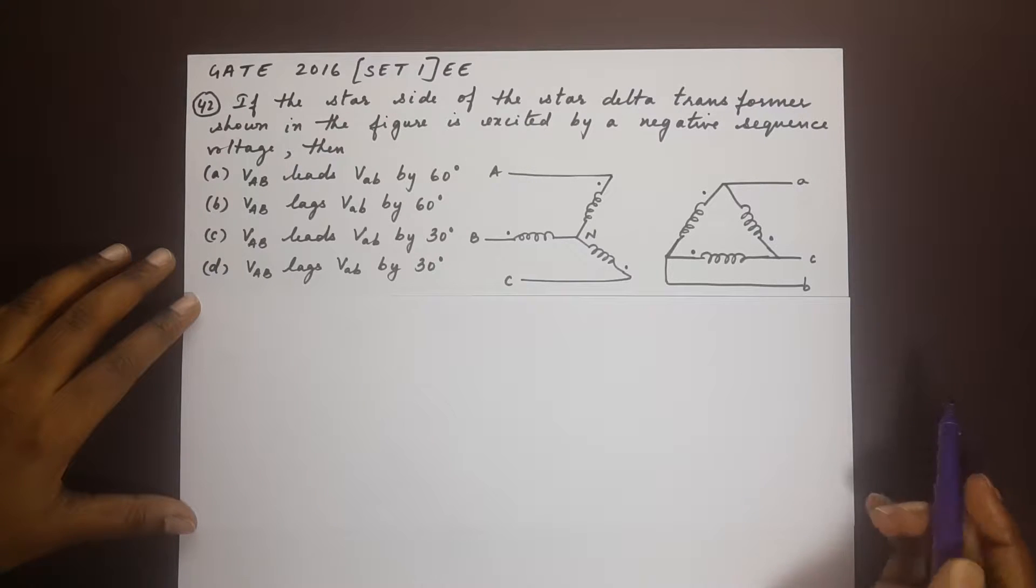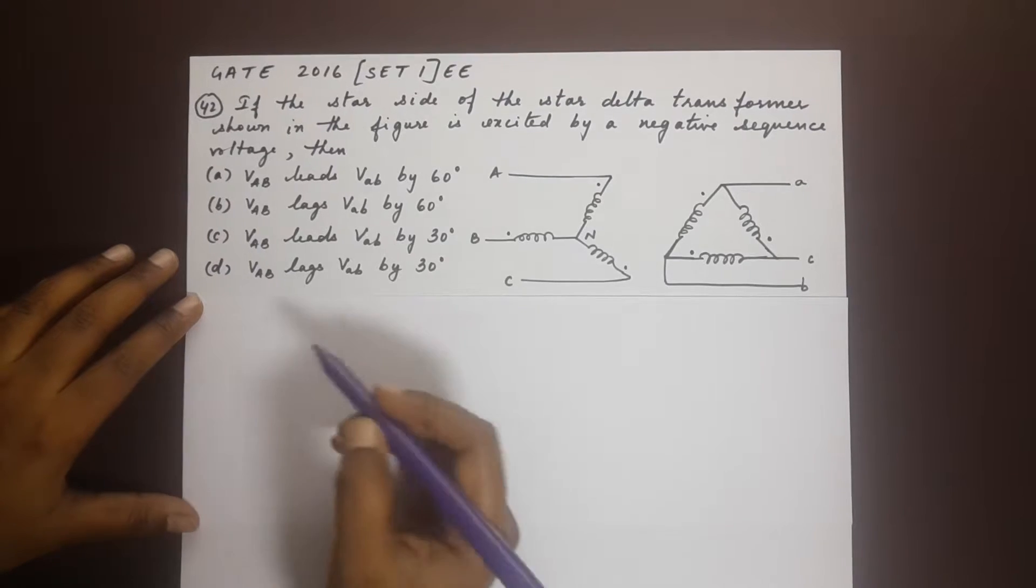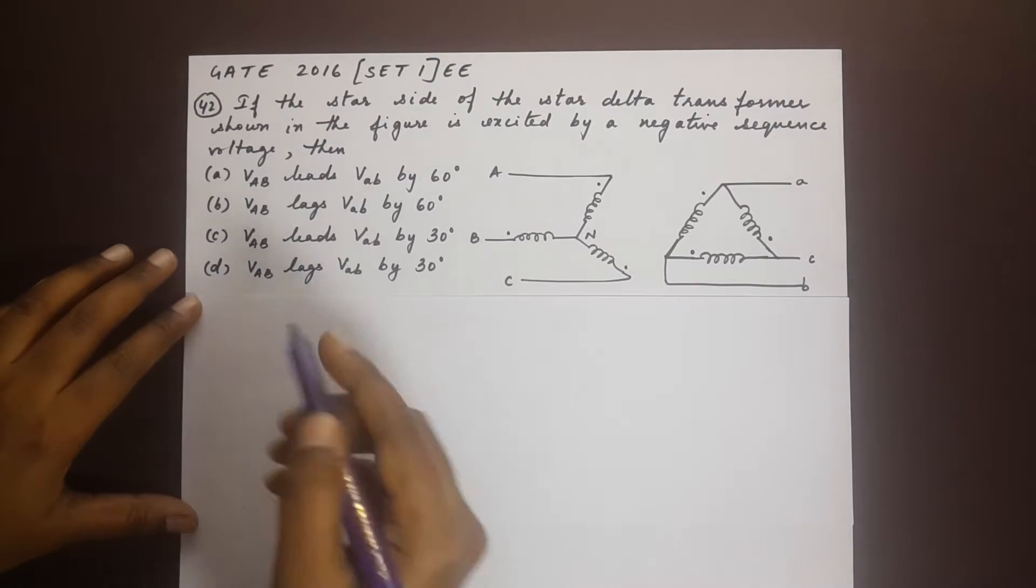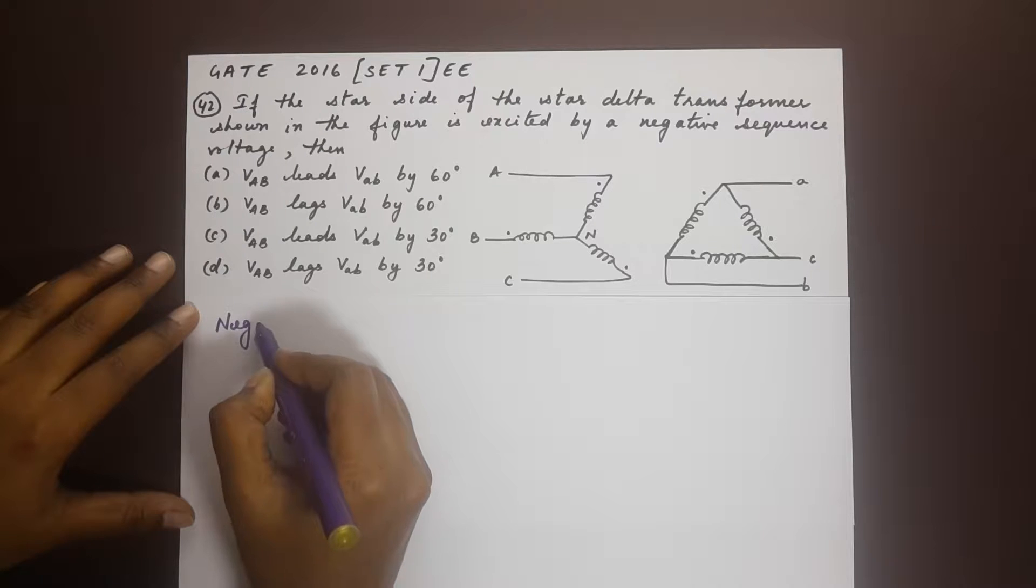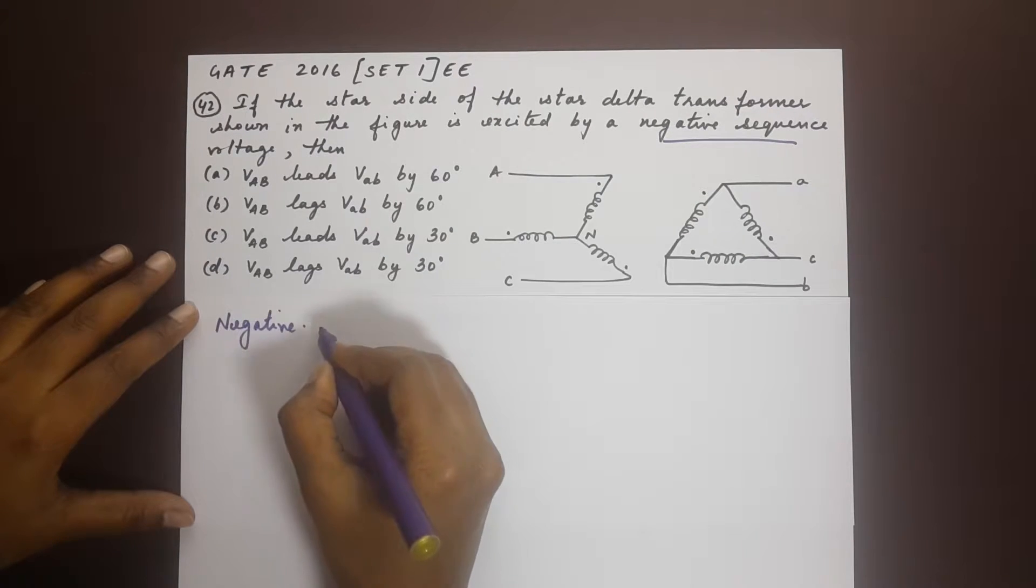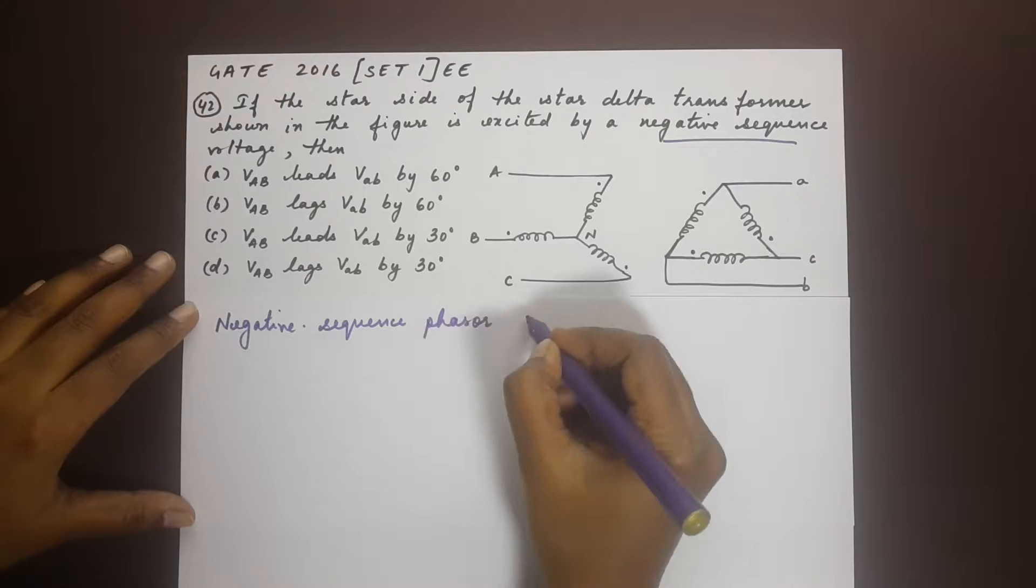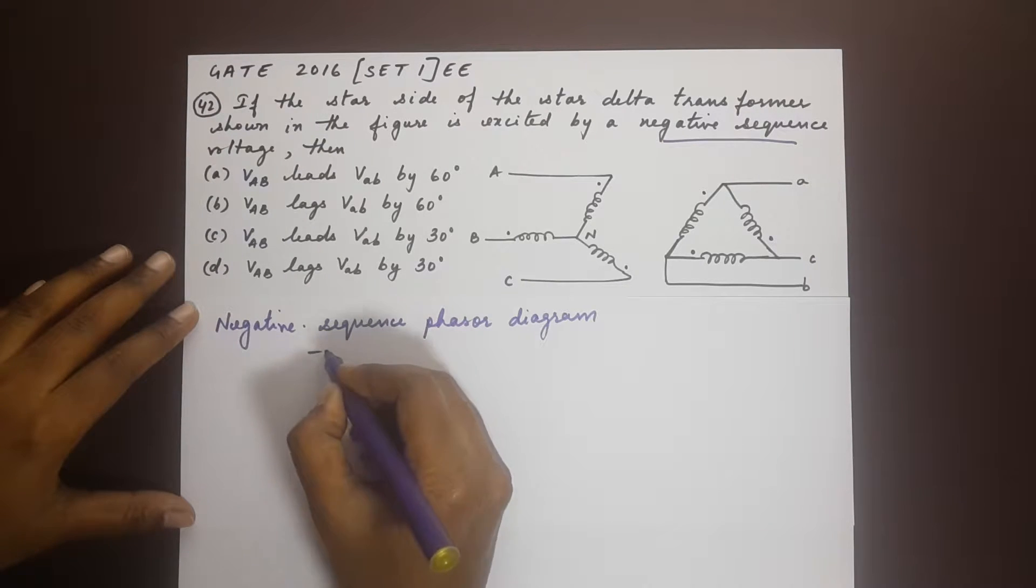So let's first draw the negative sequence voltage phasor diagram for the primary side or the star side. Negative sequence phasor diagram for the star side.